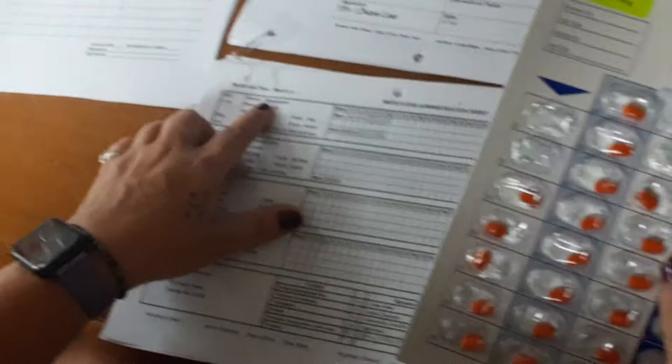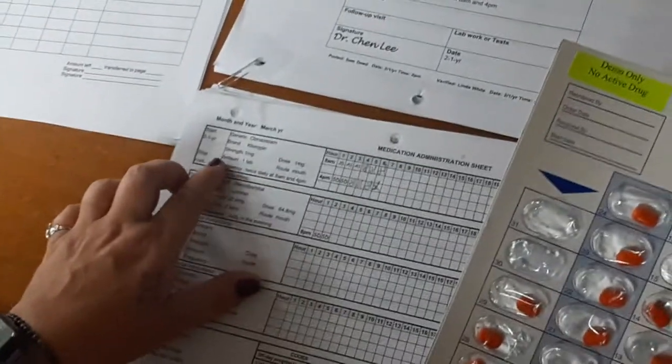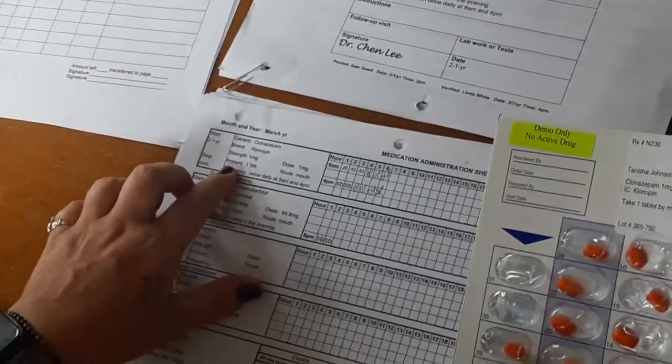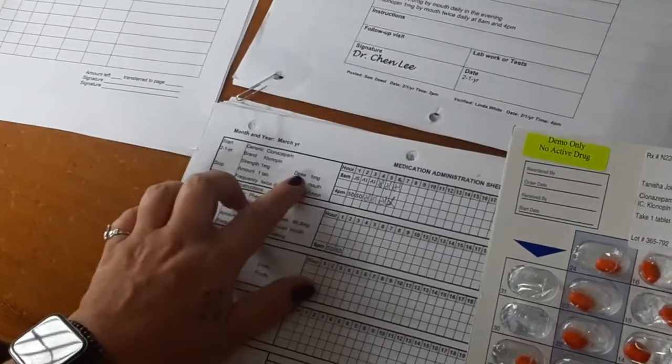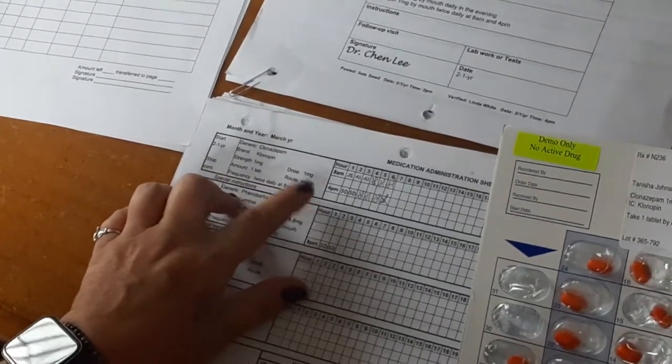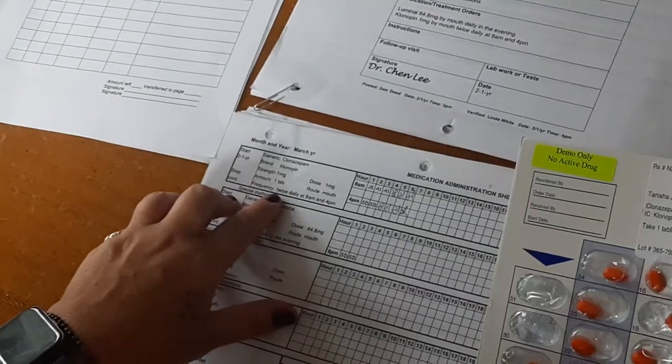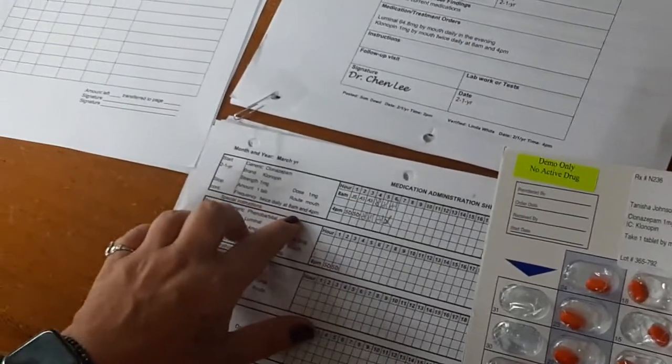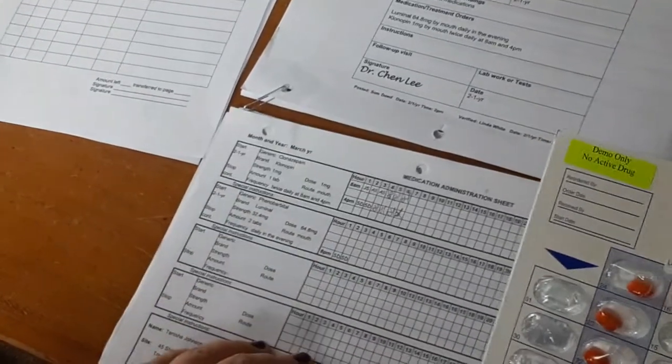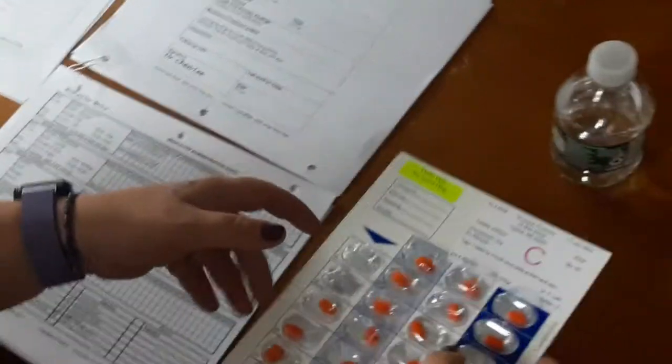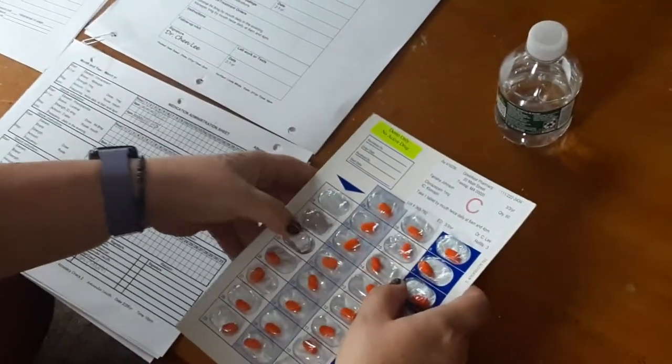I see Tanisha Johnson, generic clonazepam, brand Klonopin. Strength, 1 milligram, amount, 1 tab, dose, 1 milligram, route, mouth, frequency, twice daily, at 8 a.m. and 4 p.m. Now I can prepare the medication. One tab.